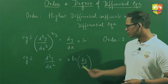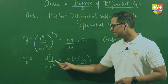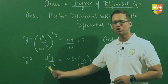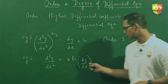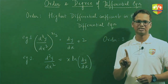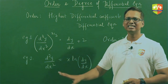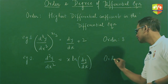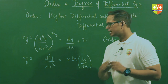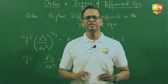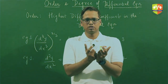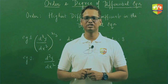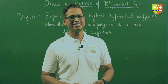For example 2: d²y/dx² equals x·ln(dy/dx). Out of these two differential coefficients, the highest order is given by d²y/dx², because here y has been differentiated twice with respect to x, whereas dy/dx has y differentiated only once. So the order of this differential equation is 2. When deciding order, we look at the entire expression and pick the term where the derivative of y with respect to x has occurred the maximum number of times.